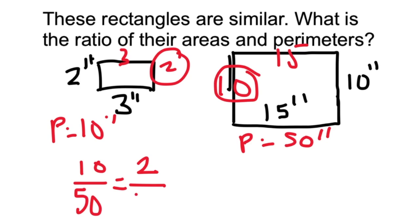Now let's look at the width of the large rectangle and put 10. And you can see that if you simplify both of these they are both the ratio one-fifth. So the ratio between the sides is the same as the ratio between the perimeters.